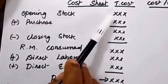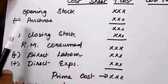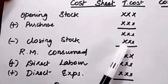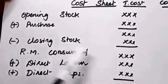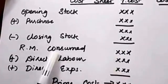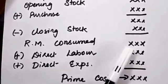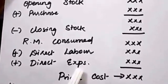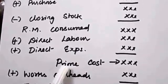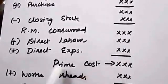In the cost sheet, first we take opening stock — last year's closing stock is the opening stock for the current year. We add any additional purchases made during the current year, then subtract closing stock not used this year, to get the actual raw material consumed. Adding direct labor and direct expense to direct material gives us prime cost — direct material used, direct labor, and direct expense combinedly called as prime cost.